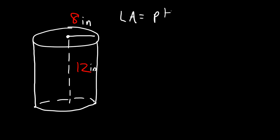The lateral area is basically the perimeter times the height, and the perimeter is basically the circumference of the circle, and so that's 2πr and then times the height, which is h. So that's the lateral area. The radius in this example is 8 and the height is 12.